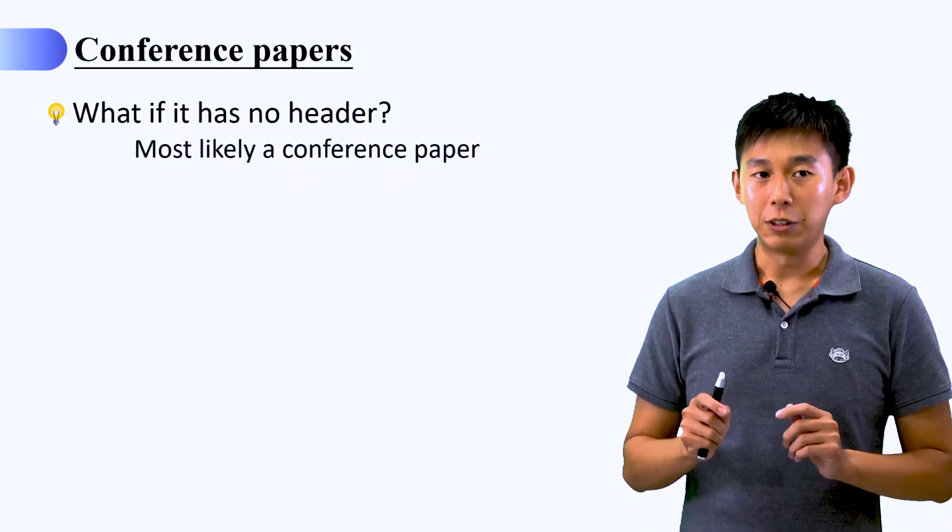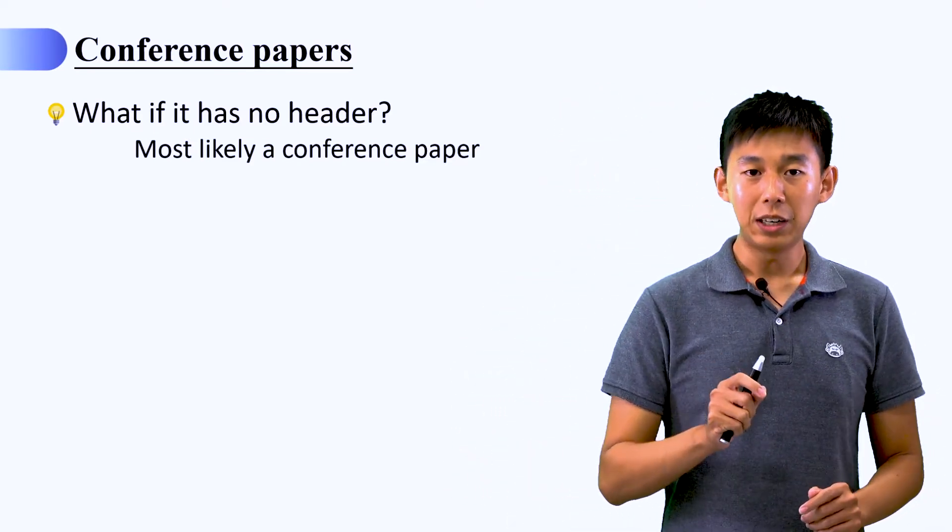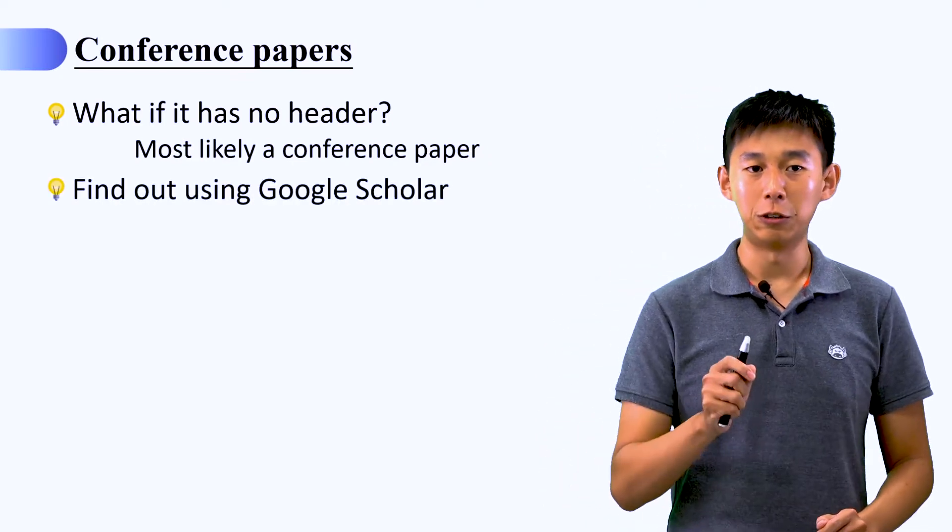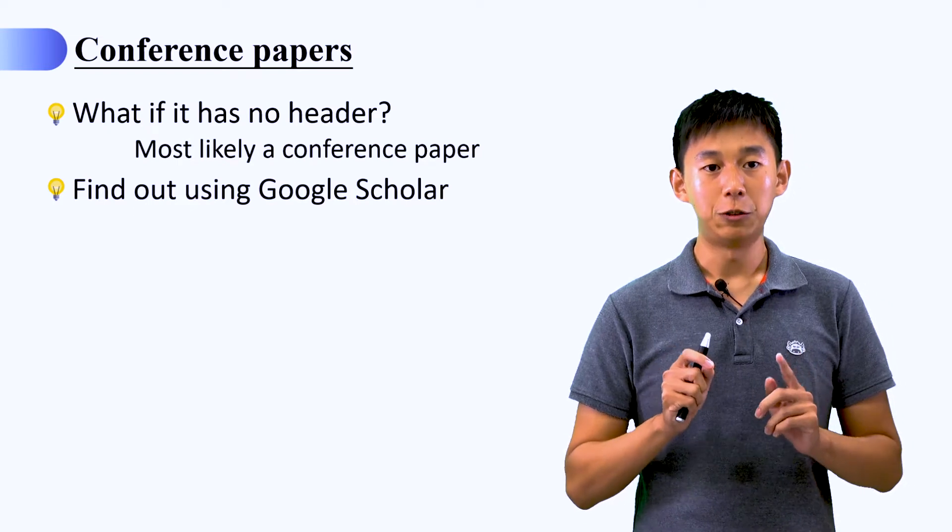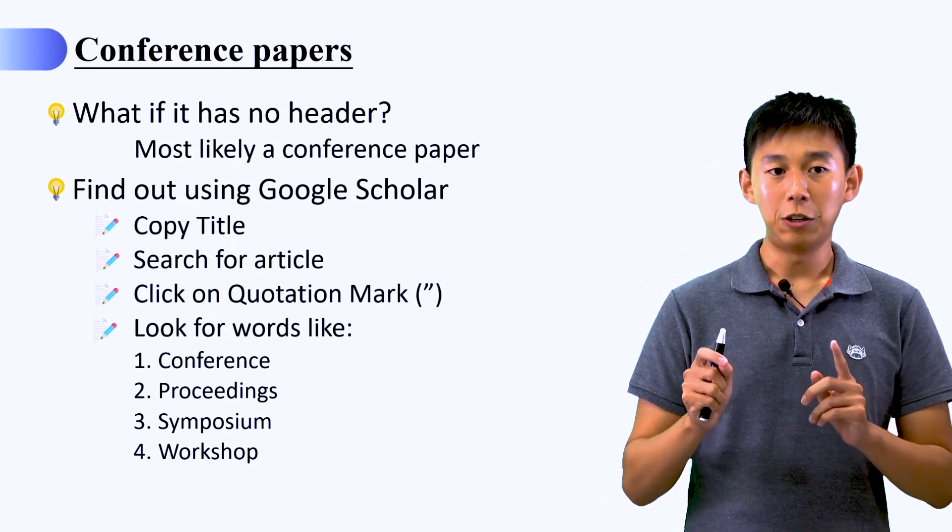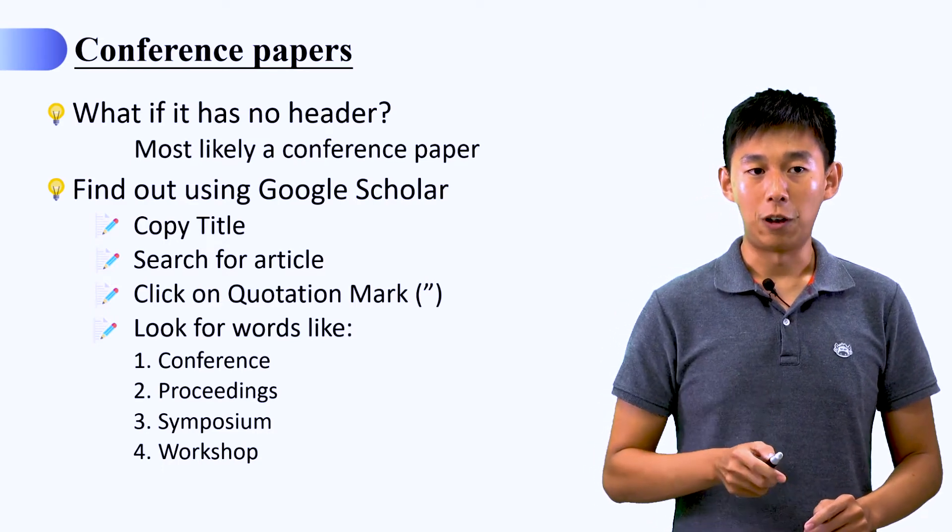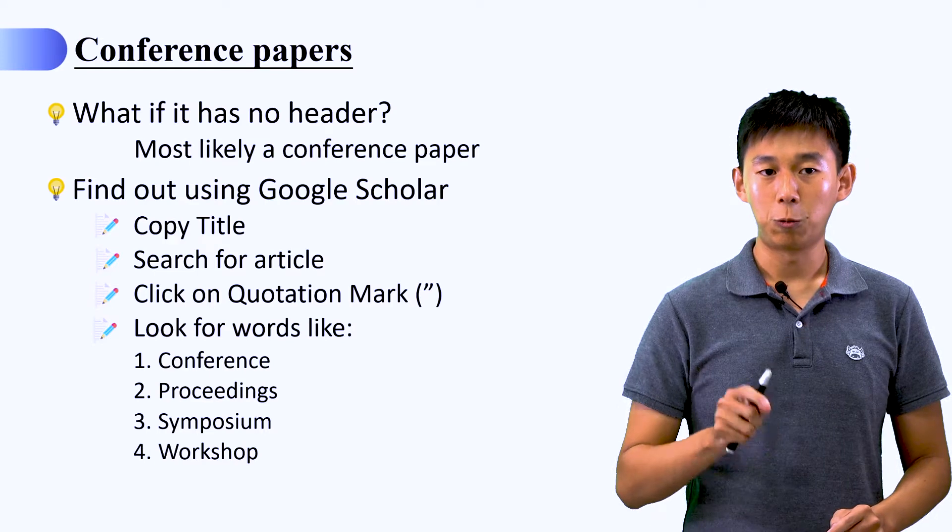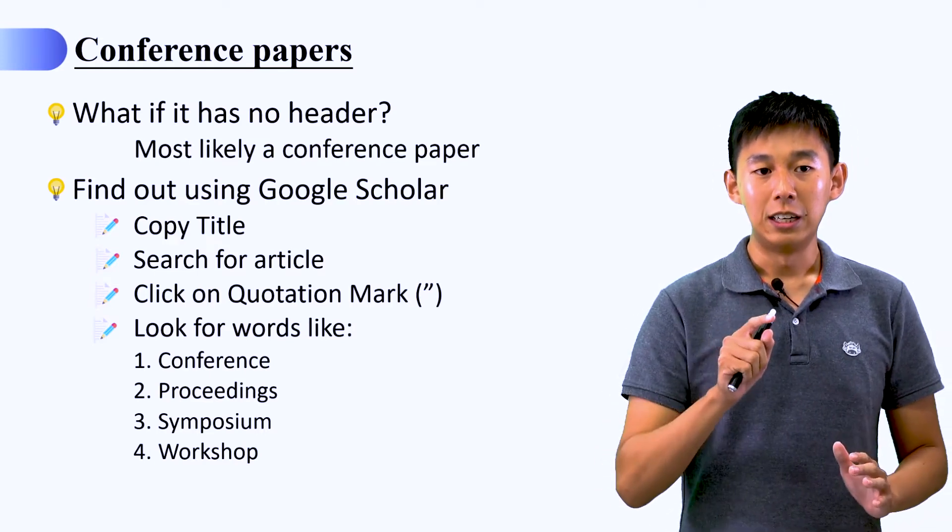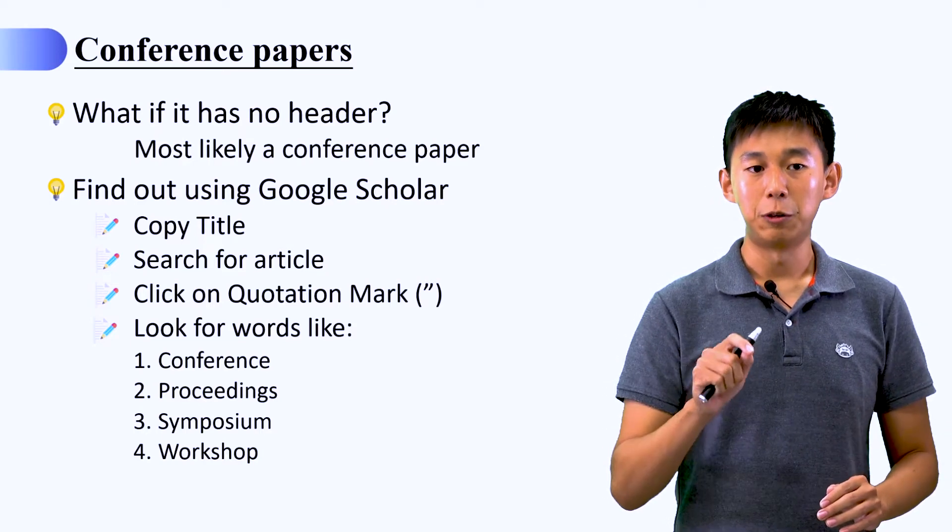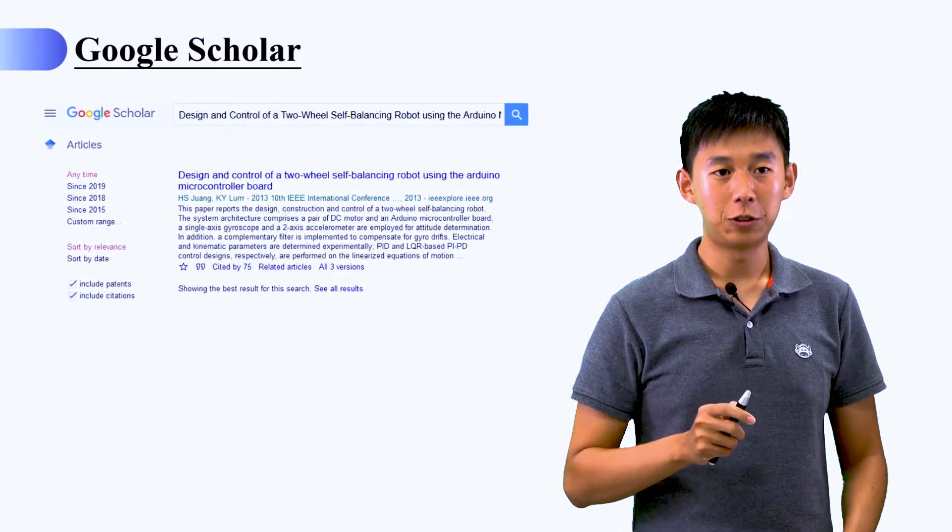And what if it has no header? It is most likely a conference paper. But if you want to make sure, you can use Google Scholar to check it out. Okay, we have some few steps. The first, you need to copy the title of the article and then put in the search box of the Google Scholar, and then click on quotation mark and a lot of information will show up. So just look for words like conference, proceeding, symposium, or workshop.